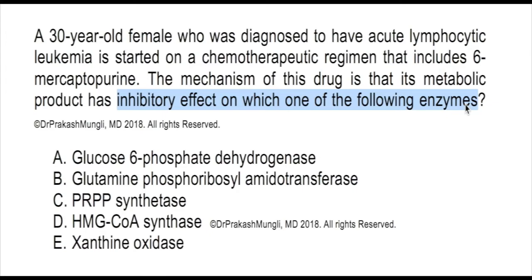Take note of that inhibitory effect. Now, 6-mercaptopurine is going to compete with purine derivatives like hypoxanthine or guanine. Hypoxanthine and guanine can be used by an enzyme called hypoxanthine-guanine phosphoribosyl transferase, simply referred to as HGPRT. So 6-mercaptopurine is going to compete with hypoxanthine or guanine for the HGPRT enzyme.